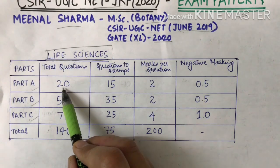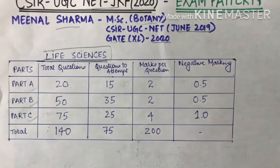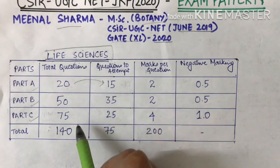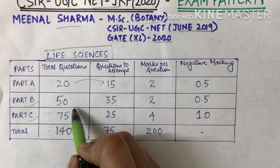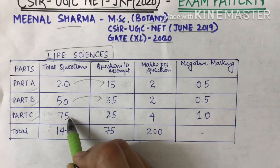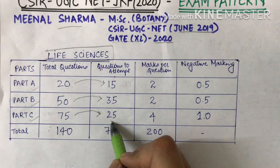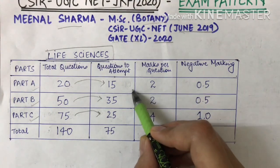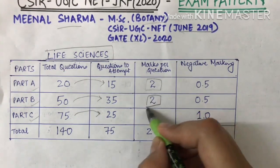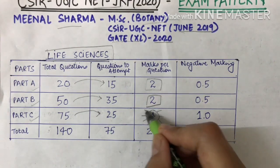In Part A, you have to attempt a maximum of 15 questions. In Part B, you have to attempt a maximum of 35 questions. In Part C, there are 75 questions out of which you have to attempt only 25. In Part A and Part B, each question carries 2 marks, and in Part C, each question carries 4 marks.